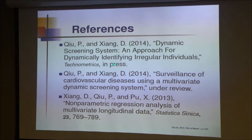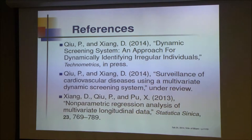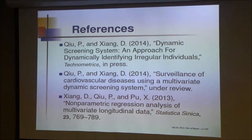We have written three papers on this. The first paper will appear in Technometrics in the May issue — that paper was handled by the previous editor, but now I'm the editor so I know it will appear in May. The univariate case monitors only one index. The multivariate case is still under review. In the multivariate case, how to do nonparametric regression analysis of multivariate longitudinal data is actually itself a new research topic — how to estimate the multivariate mean function nonparametrically — so we wrote another paper published in Statistica.